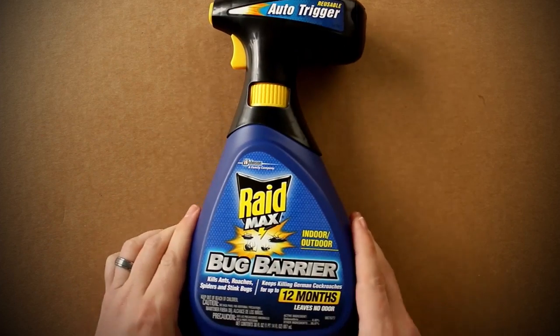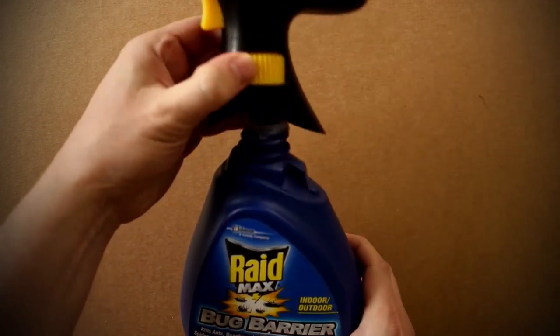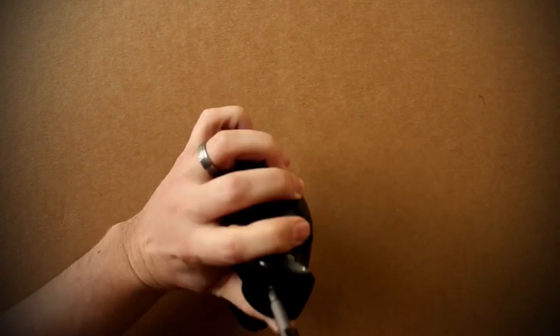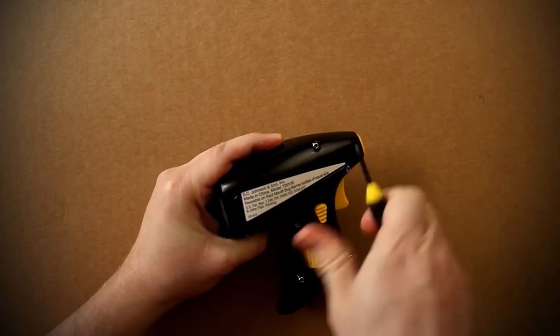But for now, let's set this aside and grab the automatic sprayer. Remove the bottle from the sprayer and safely seal it and store it away. Then on the trigger, you can unscrew the back and remove the batteries, and then unscrew the side to view how it all works.